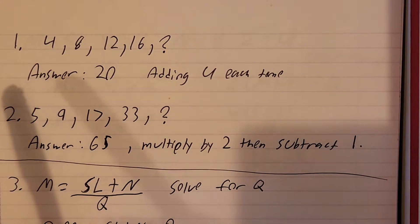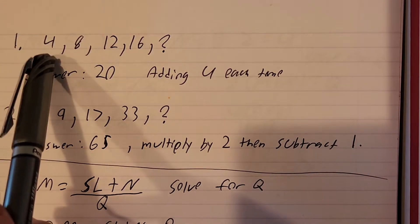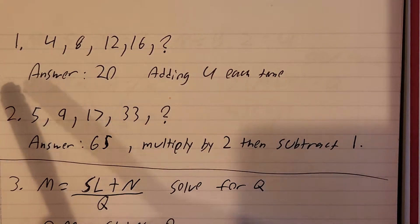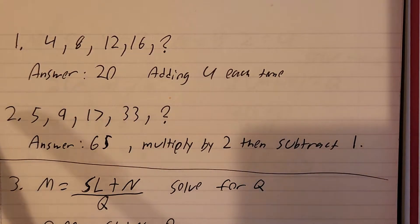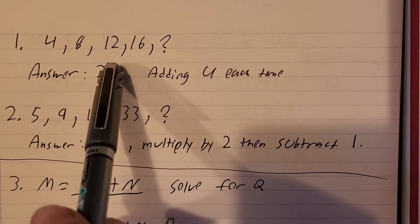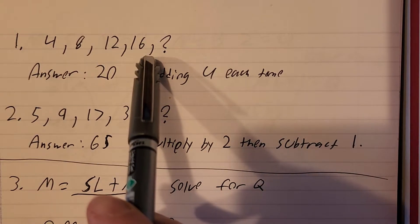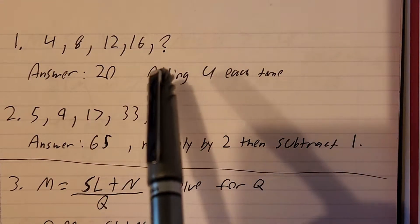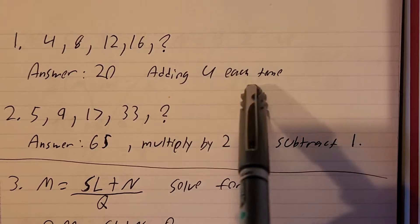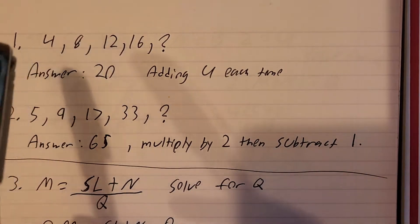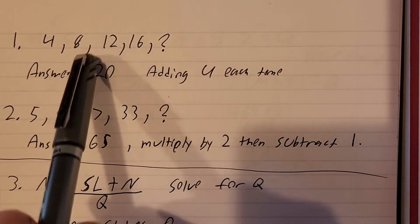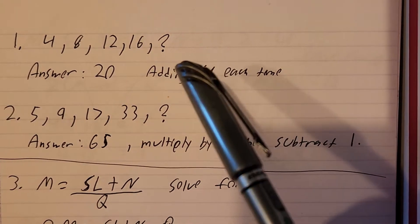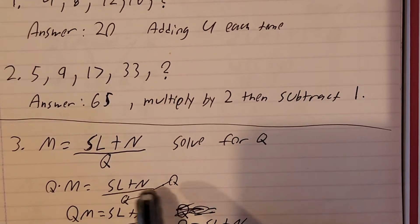The first thing on the math test that I remember was number sequences. So: 4, 8, 12, 16 — the next thing would be 20, right? You're adding four each time. So that's a simple one. There are simple ones like that on the test, so bonus points, easy.